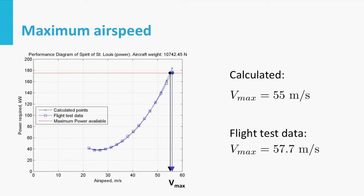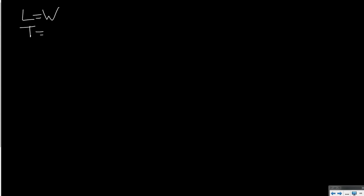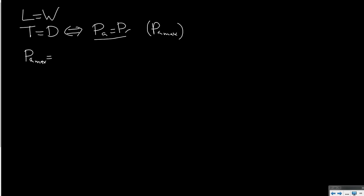If you do not have the diagram readily available, you can also calculate maximum airspeed analytically based on the equations of motion. The equations of motion for steady horizontal flight are lift equal to weight and thrust equal to drag. Multiplying the second equation by airspeed gives power available equal to power required. For maximum airspeed we need maximum power available. So maximum power available equals drag times airspeed. Now I will apply a trick: multiply drag by lift divided by lift — which equals 1 — times airspeed.